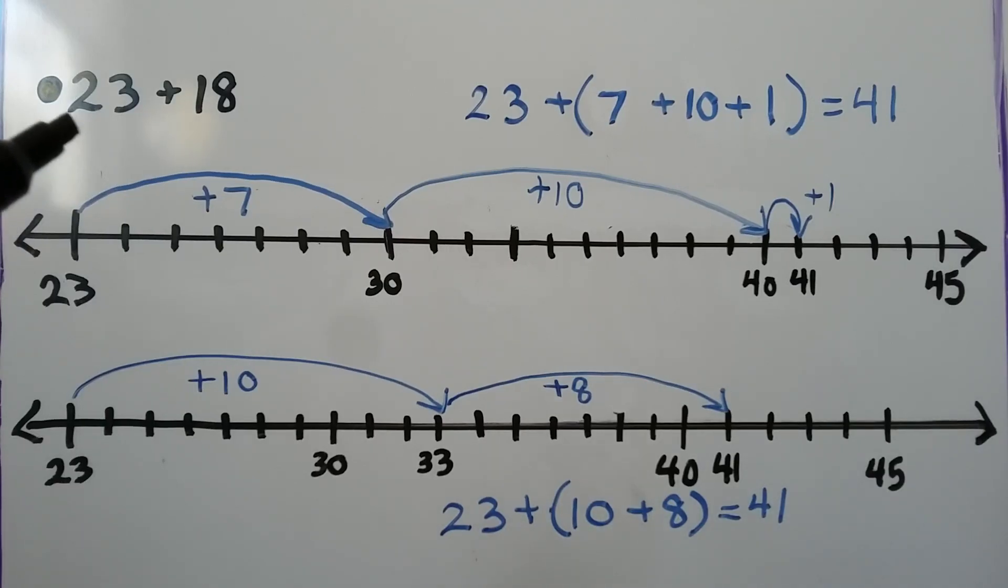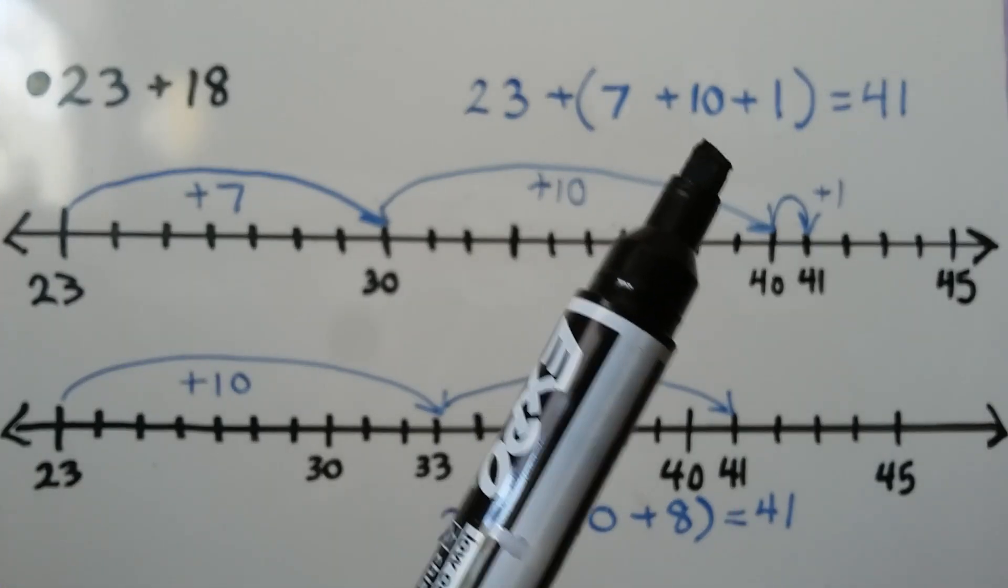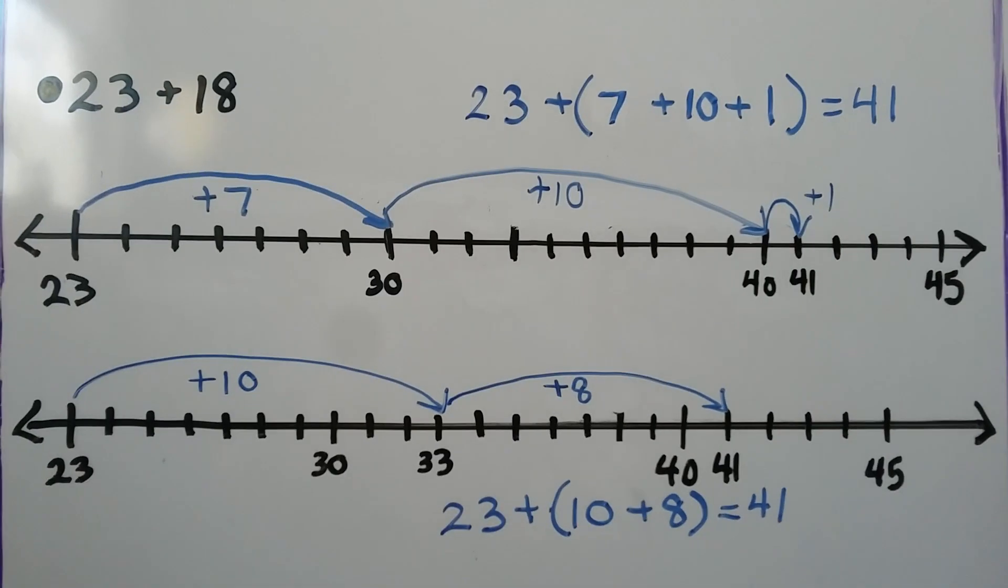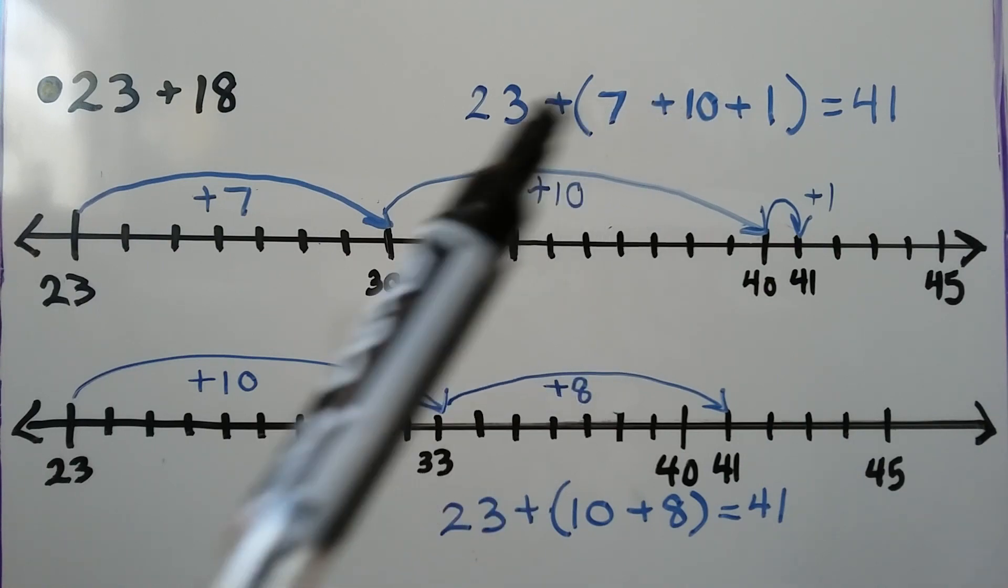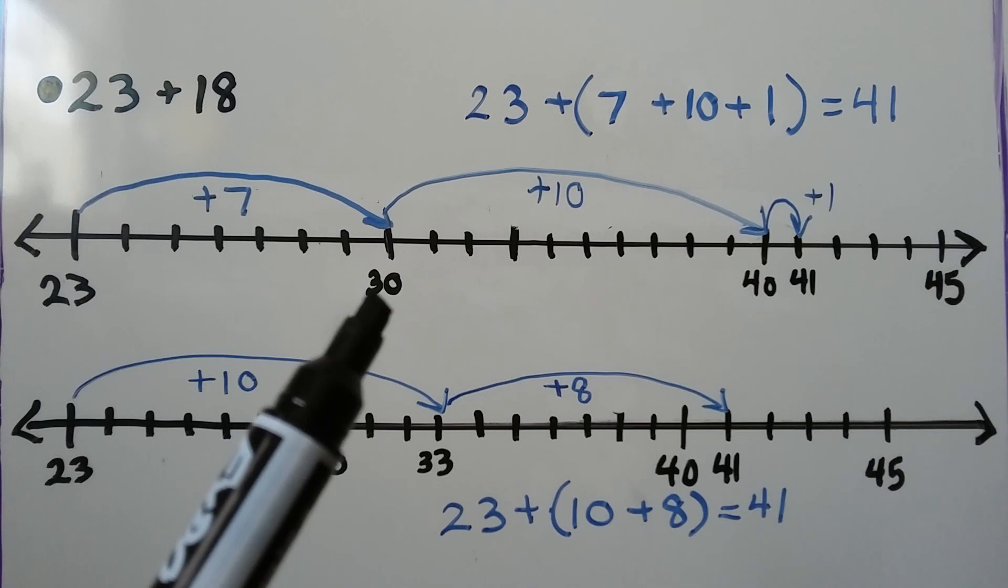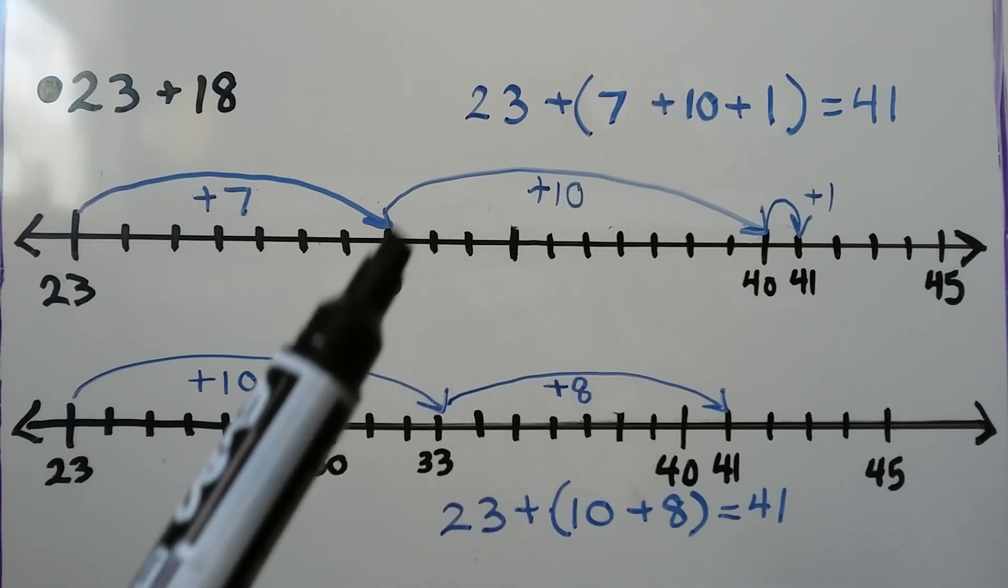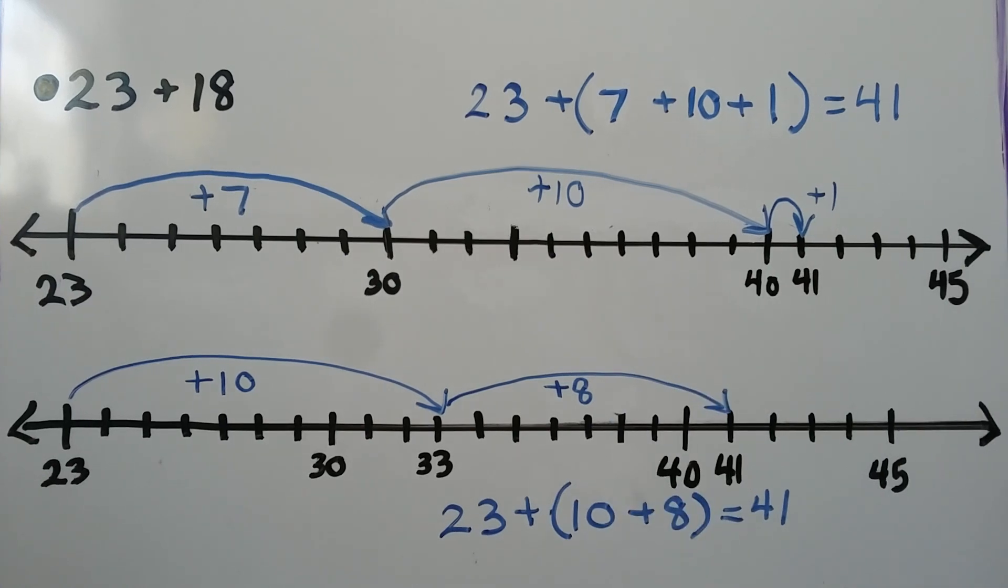If we need to add 23 plus 18, we can break the 18 apart into a 7 plus a 10 plus a 1. By breaking it apart into this, we can add the 7 first to the 23 and get to 30. Then we can add the 10, which will get us to 40, and then add the 1, which will get us to 41.